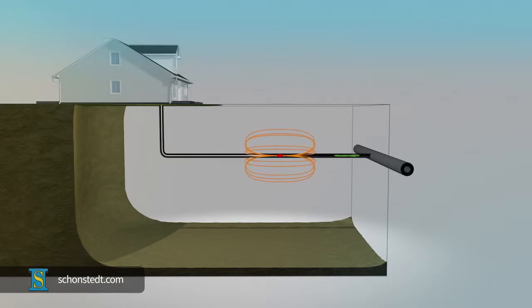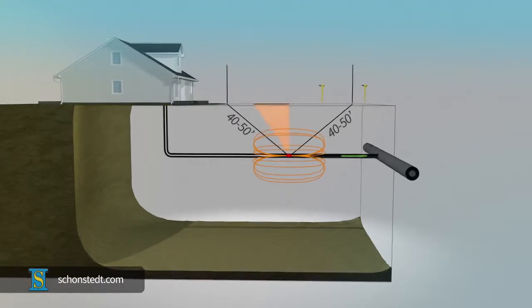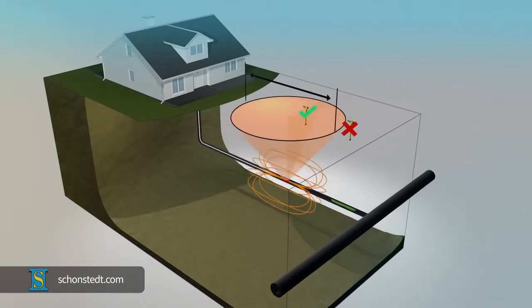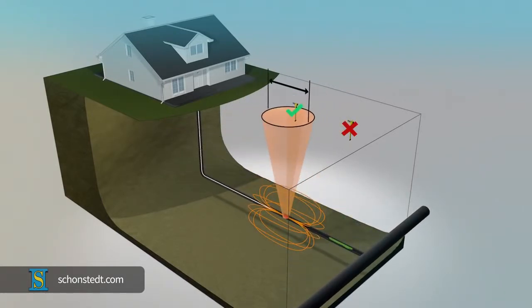Otherwise, locating it can be extremely difficult. As a rule, you must be within a distance of 40 to 50 feet from the sonde to be able to pick up its signal. As you can see, if the sonde is deeper, then the diameter of the proximity area on the surface is smaller.